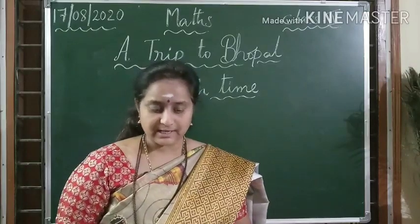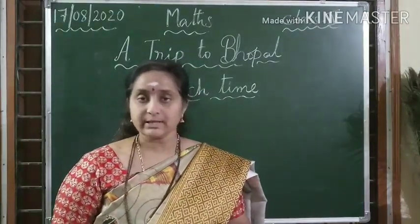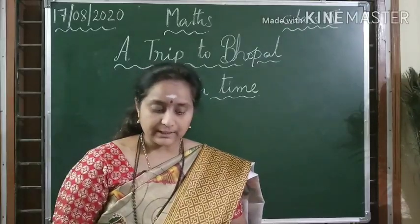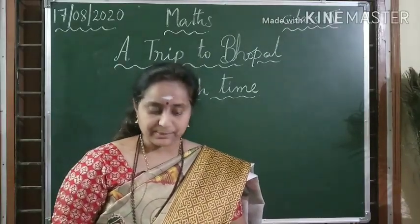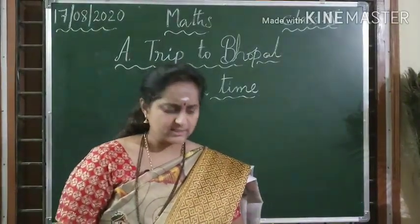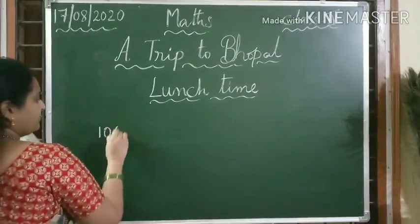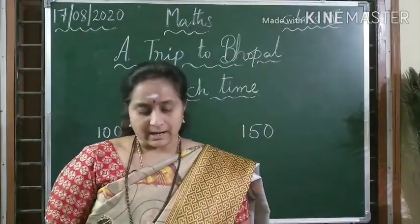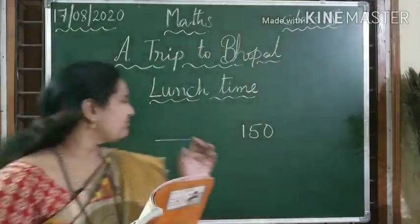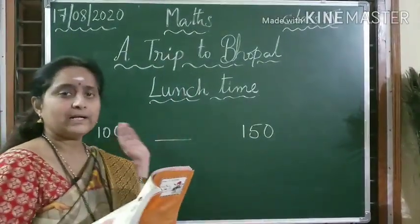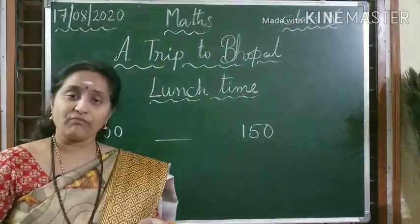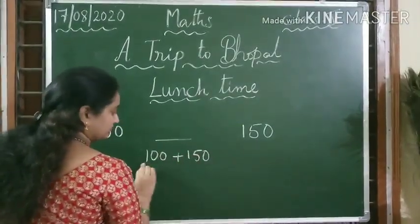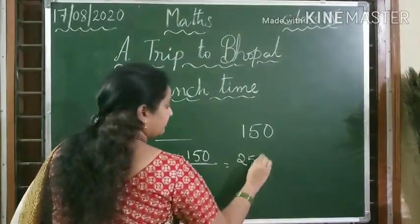Manjeet and Banu quickly finish their lunch and start asking puzzles to pass the time. Manjeet asks Banu one question: tell me the number which is exactly between 100 and 150. Banu is thinking — from 100 to 150, how many numbers will be there? We need to find the number exactly between. We will get 50 numbers, so we cannot write all. What we have to do is add these two numbers and divide by 2. So we get 250, then 250 divided by 2.